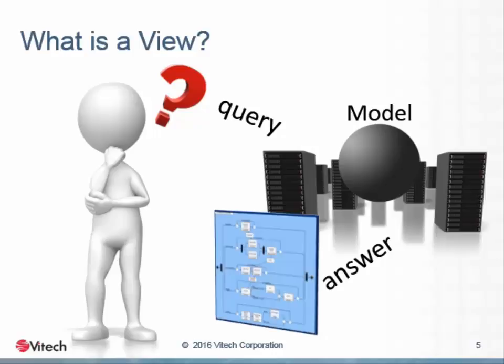What exactly is a view? A view represents an answer to a specific question. The question is posed to the database as a request for a particular subset of the information collected in the database about the model. Included in the request is a specification of the rules regarding the way the database is to return the information. For example, the request might ask the database to return a specific set of information formatted as an activity diagram.